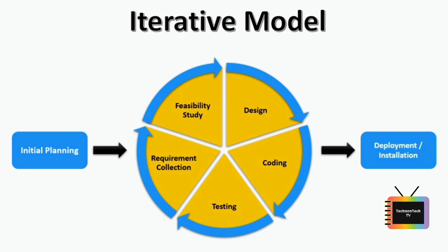The iterative model is similar to the waterfall concept. The only difference is that the iterative model allows you to go back to the previous stage and update the criteria as well as make some changes if needed. Once the initial requirement planning process is completed, some of the other stages are repeated. As these cycles are completed and implemented, the overall end product is improved and iterated on. These stages are repeated if any new requirements pop up or any error or bug is identified in the system.